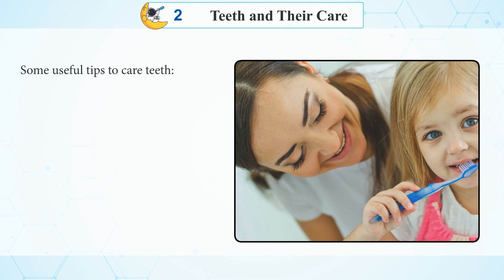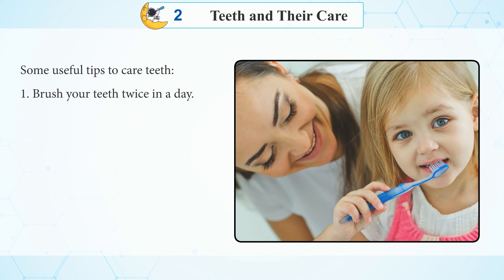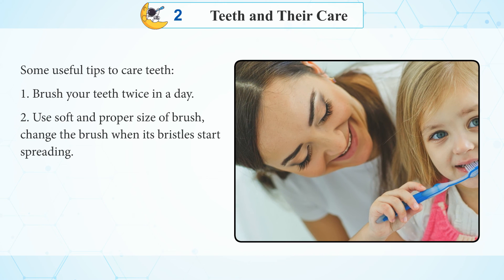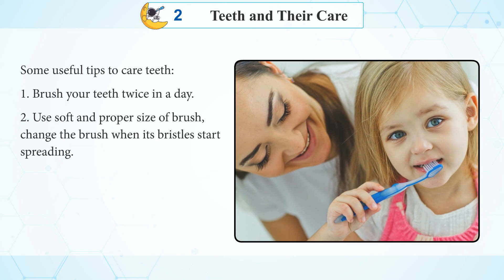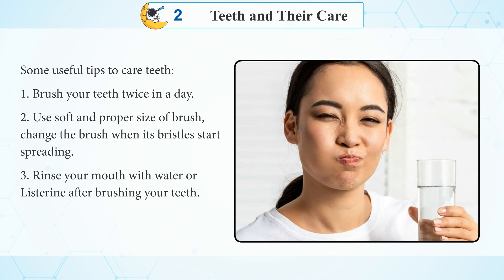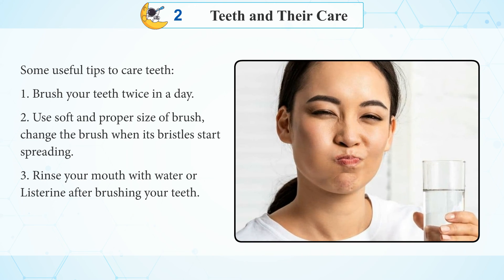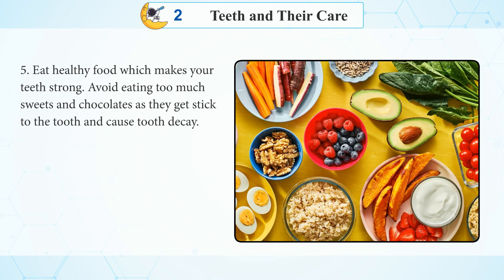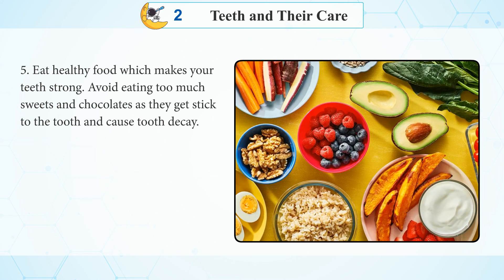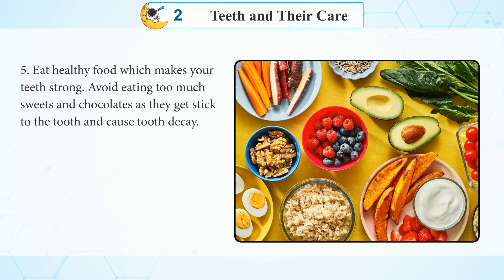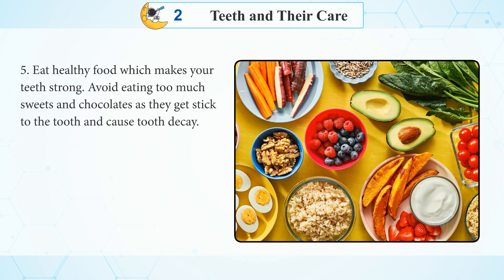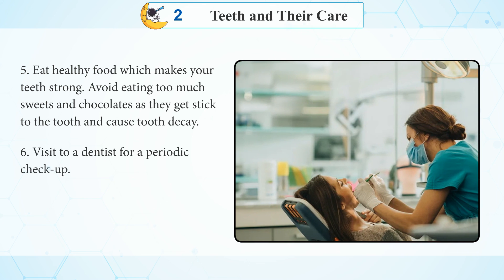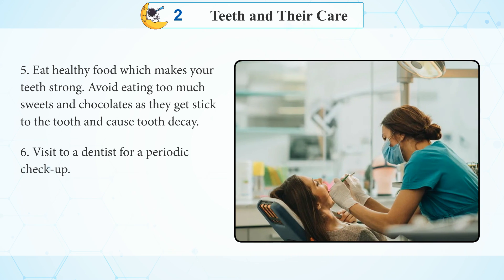Some useful tips to care for teeth: Number one, brush your teeth twice a day. Two, use a soft and proper size of brush, and change the brush when its bristles start spreading. Three, rinse your mouth with water or mouthwash after brushing your teeth. Number four, clean your tongue with a tongue cleaner. Number five, eat healthy food which makes your teeth strong; avoid eating too much sweets and chocolates as they get stuck to the tooth and cause tooth decay. Number six, visit the dentist for a periodic check-up.